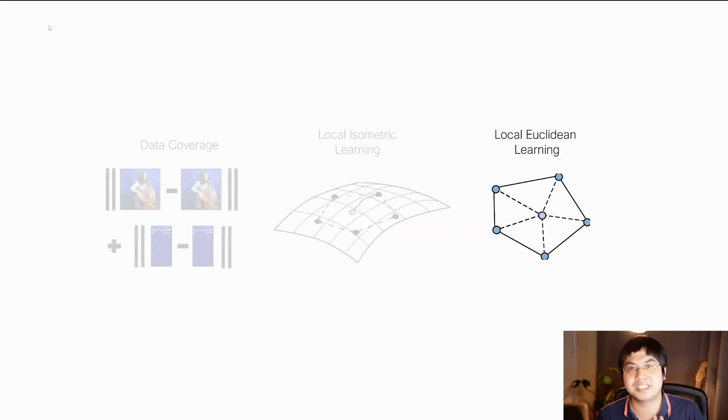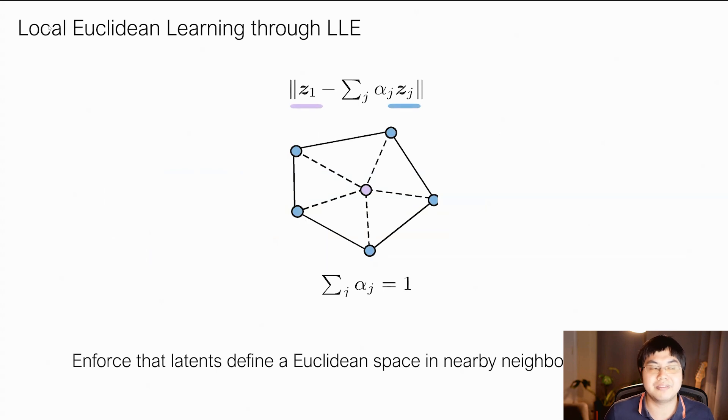Next, we want our latent space to be locally metric. That is, given a single point in our latent space, we want to be able to move around in our latent space and get good and similar perceptually consistent samples. To do this, we enforce that our manifold is locally linear in nature. That is, given a single latent point, we enforce that it can be reconstructed using the nearby latency to it. This way, this latent space lies in a local linear subspace defined by its neighbors. And in such a manner, we can move around locally around this latent space and get a variety of consistent samples as they all lie on the surrounding manifold.